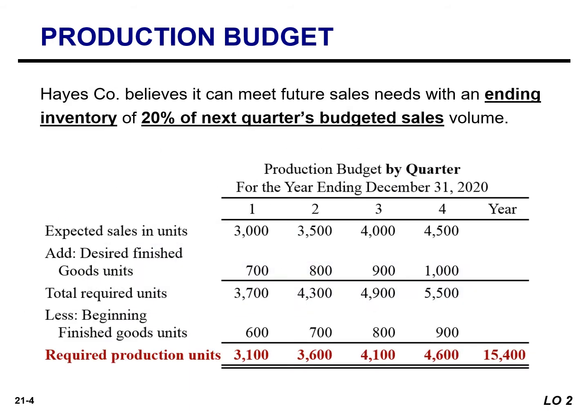This is the production budget for Hayes Company. In the first quarter, expected sales are 3,000 units. Hayes Company maintains an ending inventory equal to 20% of the next quarter's budgeted sales volume. The ending finished goods inventory for the first quarter is 700 units — that's 20% of the anticipated second quarter sales of 3,500 units. Subtracting the beginning finished goods units of 600 units (20% of first quarter sales), we arrive at a required production of 3,100 units.